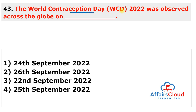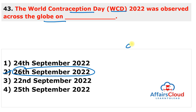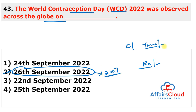World Contraception Day 2022 was observed on 26th September 2022 to improve awareness of contraception and enable young people to make informed choices about their sexual and reproductive health. The campaign emphasized the value of reproductive health while shedding light on birth control options. This day was first observed in 2007.